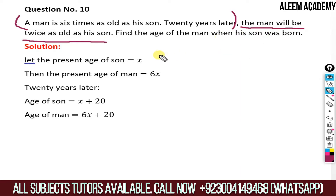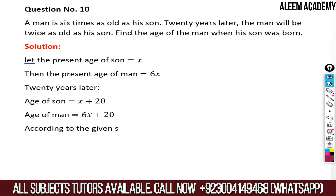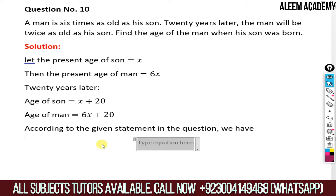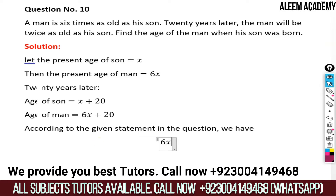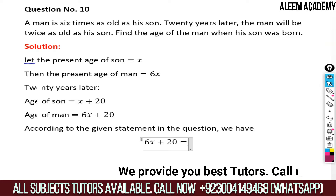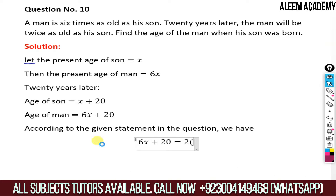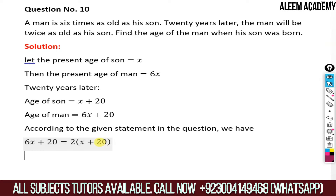The man will be twice as old as his son. We have to write the mathematical equation according to that statement. The man after 20 years is 6x plus 20, which will be equal to twice — two times — the age of his son after 20 years, which is x plus 20. So the equation is: 6x + 20 = 2(x + 20).